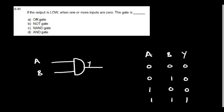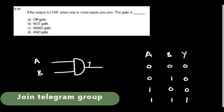If the output is low when one or more inputs are zero, the gate is an AND gate. For an AND gate, if any one of the inputs is zero — or all inputs in a multi-input AND gate — the output is zero.